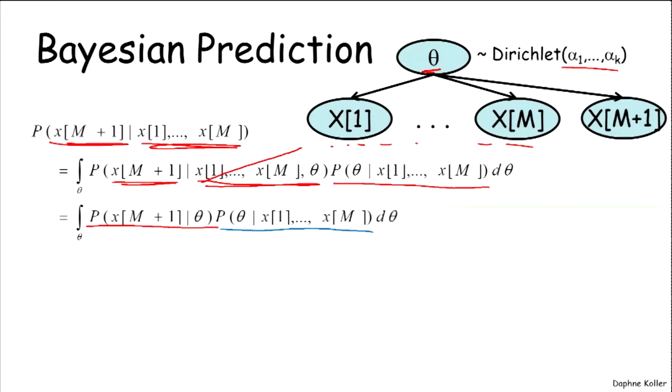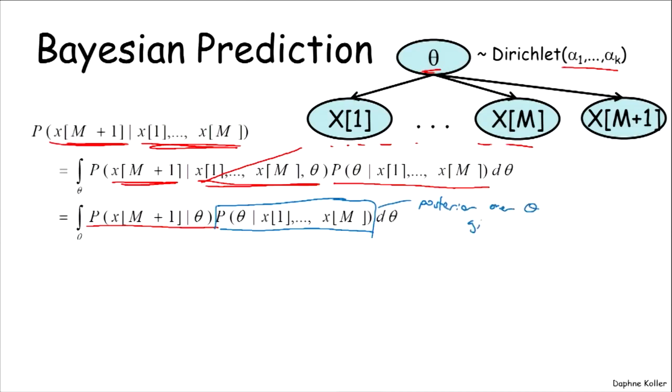And so now let's think about the blue equation, the blue expression over here, which is just the posterior over theta given d, which are x1 up to xm. And we've already seen what that looks like.